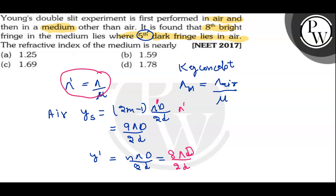So, what would be the value? 9 lambda D upon 2 mu D. Okay, 2 of mu D. As here, it is lambda dash. Now, both values would be equal. We have to put both the values would be equal. Y is equal to Y dash.